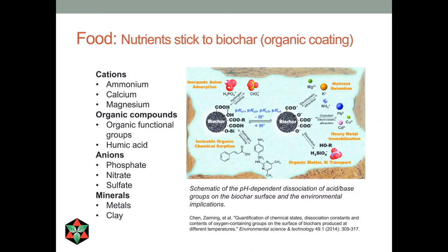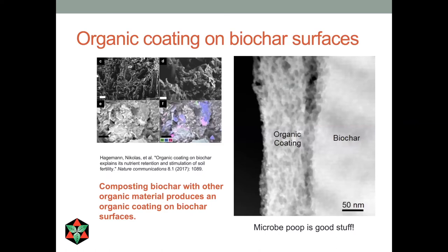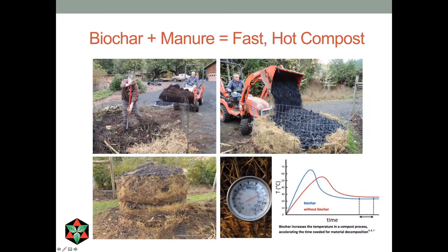The best way to get biochar charged up with nutrients is to compost it. When you first make it, it's just carbon and it's sterile from the heat process. When you compost biochar with other organic materials, it gets an organic coating — a lot of it is microbial byproducts and other chemicals. We demonstrated this in our Conservation Innovation Grant project, funded by NRCS in Oregon in 2016, where we made a compost pile with goat manure and biochar we made ourselves.